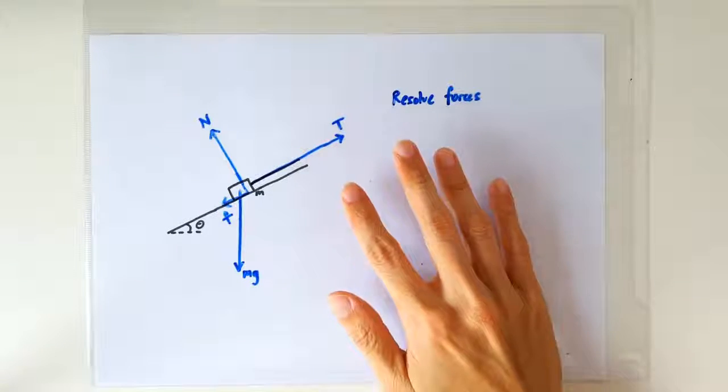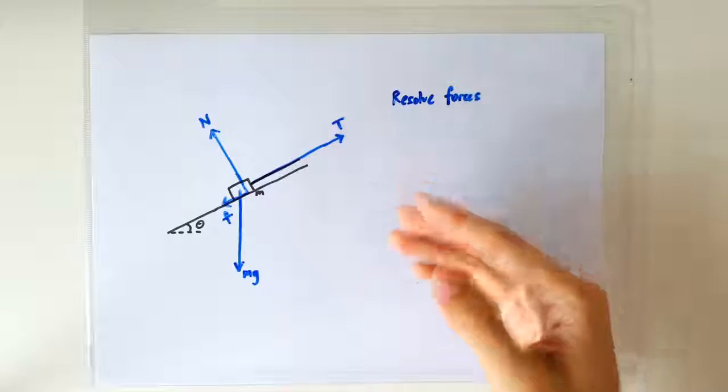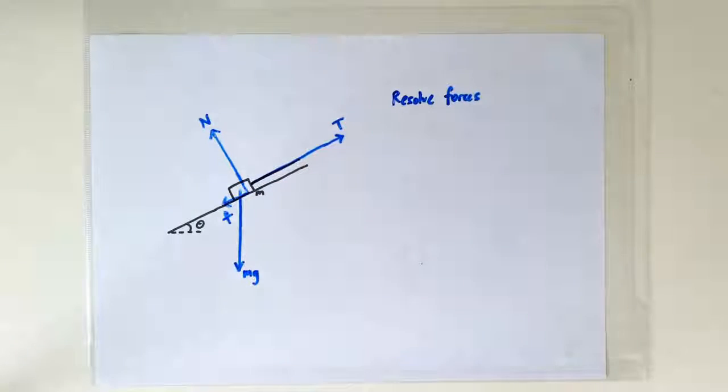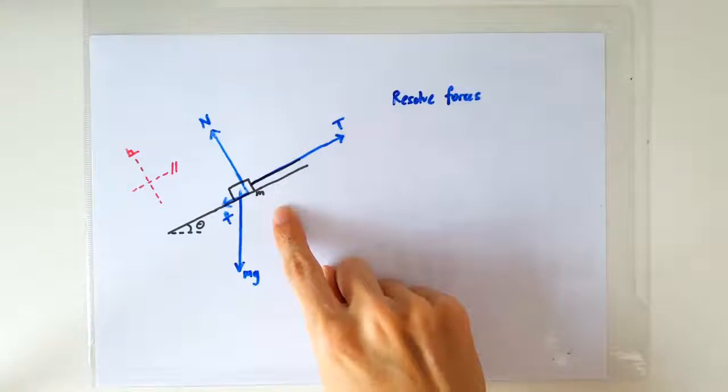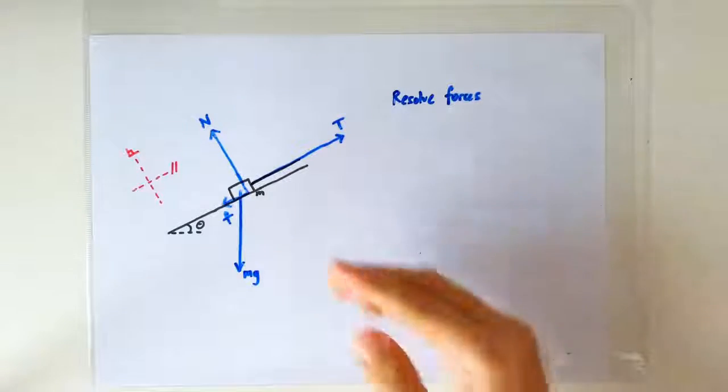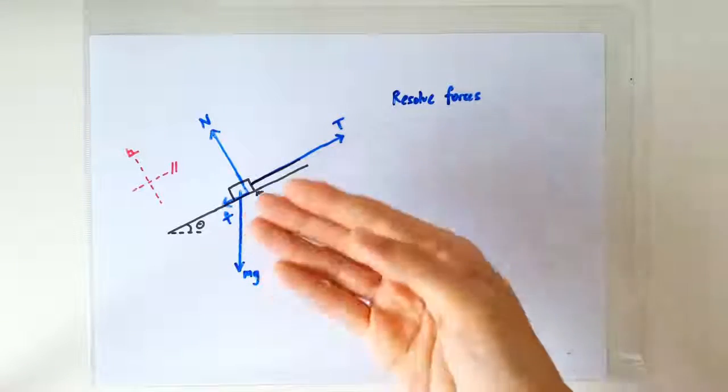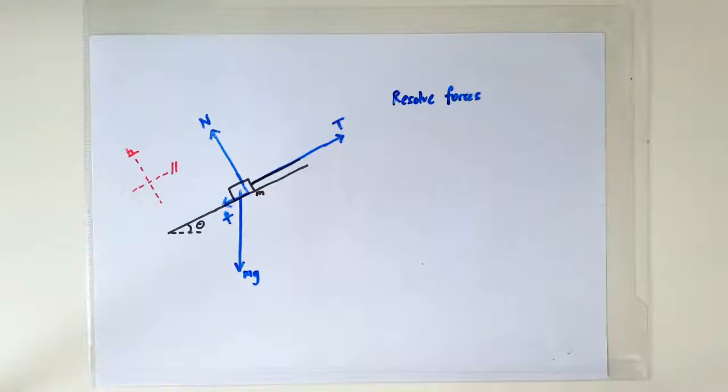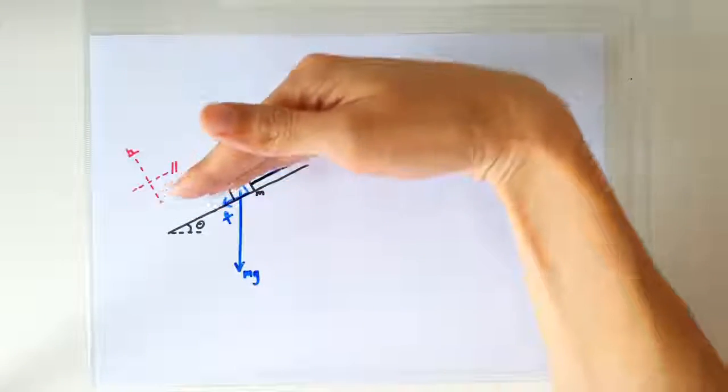If we have to do any calculations, it is easier if we resolve all the forces into two perpendicular components. In a problem such as this, where we know that the resultant force, if there is any, would be along the slope, we would prefer to resolve forces into a direction along the slope, and of course the other one would be perpendicular to the slope.